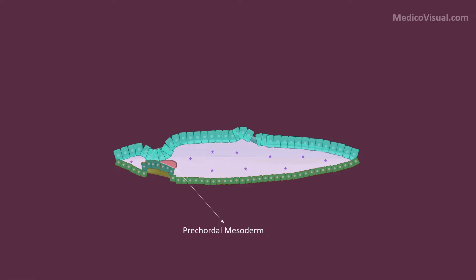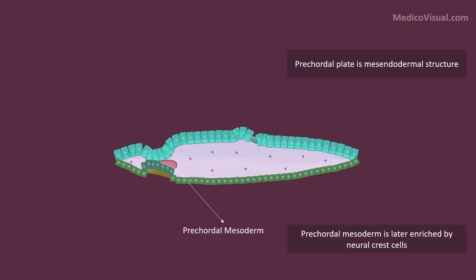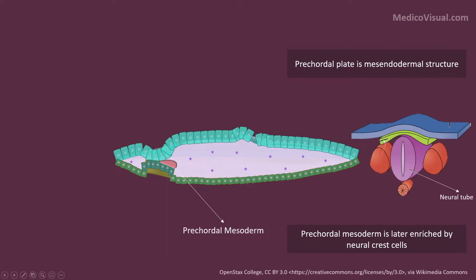Because these precordial plate cells also form the precordial mesoderm, we call the precordial plate a mesodermal structure — an interesting name given by Larson. Later, when the neural crest cells develop, the precordial mesoderm is also enriched by neural crest cells. Neural crest cells may sound like an alien concept — we will discuss it in detail in later lectures. For now, note that the cells at the caudal end of the precordial plate proliferated and differentiated into another layer, called the precordial mesoderm.